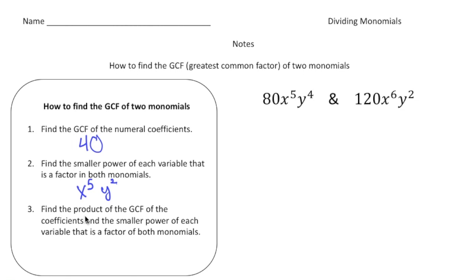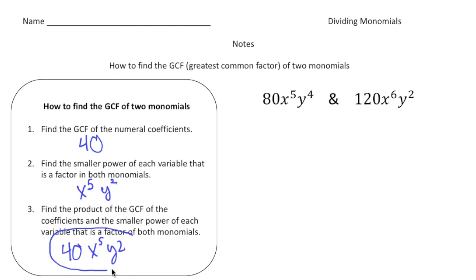Finally, step three: find the product of the GCF of the coefficients and the smaller power of each variable that is a factor of both monomials. Multiply 40 times x to the fifth y squared, and you end up with 40x to the fifth y squared. That is the GCF of 80x to the fifth y to the fourth and 120x to the sixth y squared.